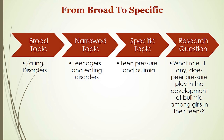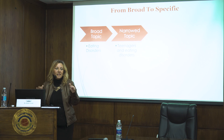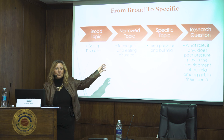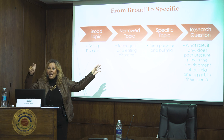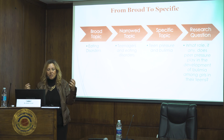One more exercise: teenagers and eating disorders. We have this problem in Egypt, in the States, and everywhere. Teenagers and eating disorders — more specific: teen pressure and one eating disorder. Bulimia is an eating disorder. So I want to investigate teen pressure and bulimia. The research question can then be: what role, if any, does peer pressure play in the development of bulimia among girls in their teens? Here I specified the gender — girls — and the age group — teens. And I have two constructs: peer pressure and bulimia as a kind of eating disorder.